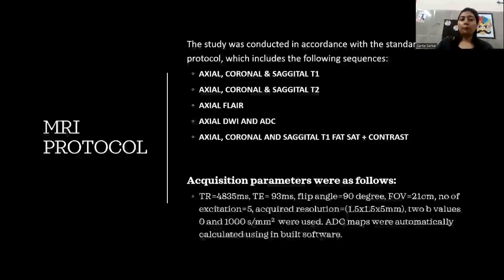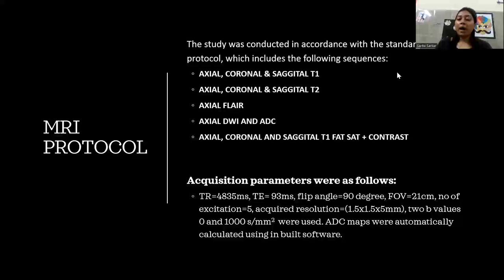The study protocol included axial, coronal and sagittal T1; axial, coronal and sagittal T2; axial FLAIR; axial DWI and ADC; and axial, coronal and sagittal T1 fat-sat plus contrast. Acquisition parameters used long TR and short TE with a flip angle of 90 degrees and FOV of 21 cm. Two b-values were taken and ADC maps were automatically calculated using the inbuilt software.